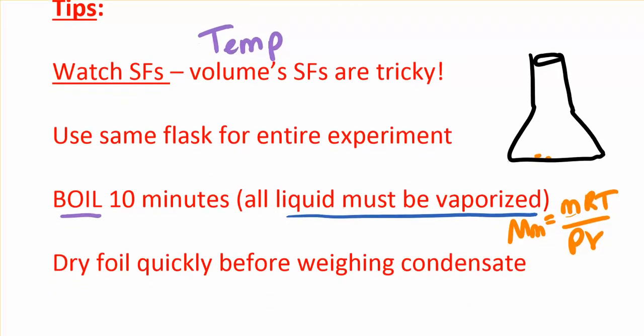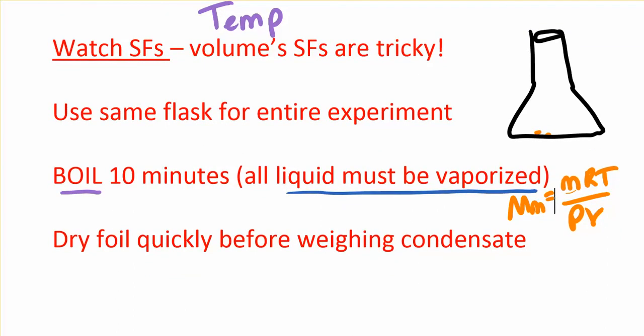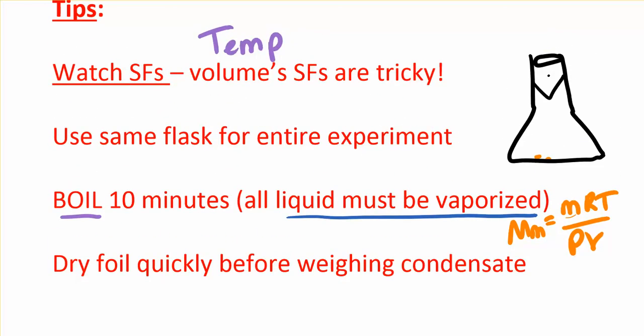Last tip here, be sure to dry your foil quickly before you weigh your condensate. The foil wrapper will get wet. And it will even get liquid up underneath it. So you'll need to kind of pull it out straight so that you can dry underneath it with a paper towel. The liquid water on the outside would make this mass too heavy. And that can really throw things off. The amount of liquid condensate that you should have is about one milliliter. And so just a few drops of water can really throw that off.